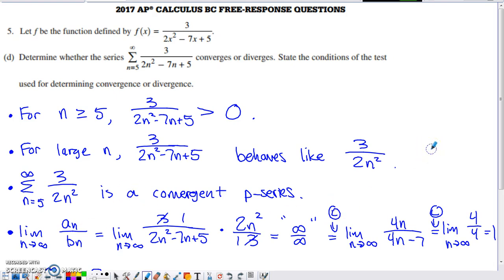The alternative method for part D is to use the integral test. Since the series is positive, since the terms of the series are decreasing, and since this function is continuous for the values of n we're going to be considering,